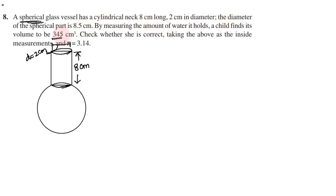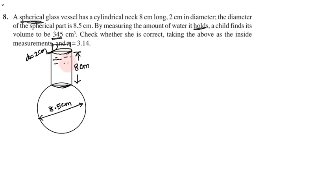The diameter of the spherical part is 8.5 cm. The radius of the cylinder is 1 cm (diameter 2 cm divided by 2). The volume claimed by the child is 345 cm³.